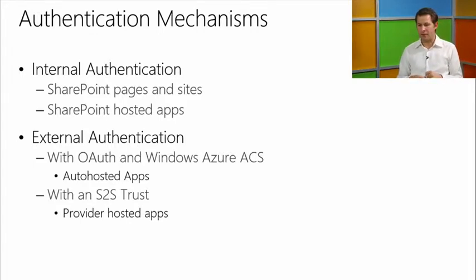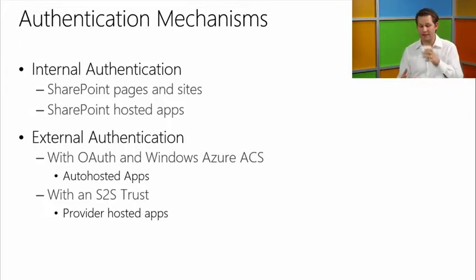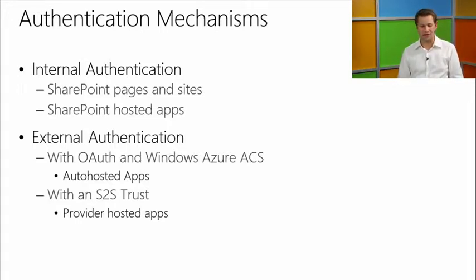External authentication is when we need to consider things like OAuth or server-to-server authentication between the two components. In Office 365, apps can talk back to SharePoint and they're authorized through OAuth. Most of it's facilitated using Azure ACS — Azure Access Control Services. So it's OAuth between your remote app and SharePoint.